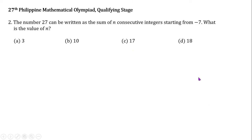Question number 2. The number 27 can be written as the sum of n consecutive integers starting from negative 7. What is the value of n?